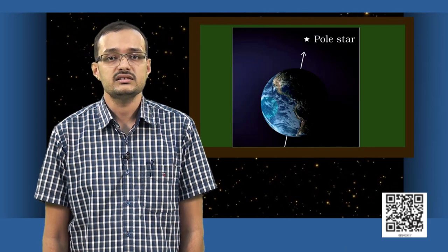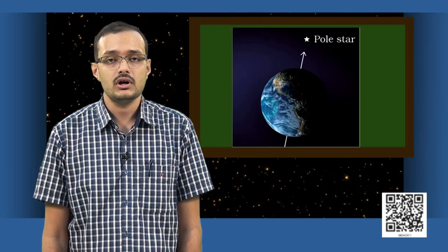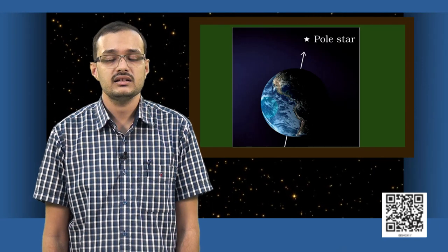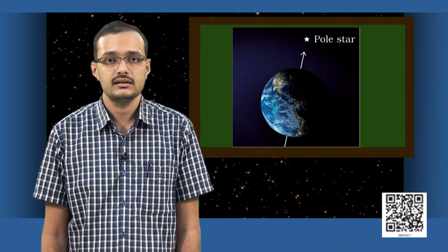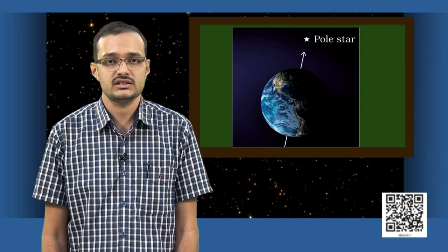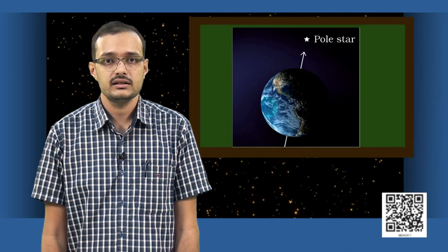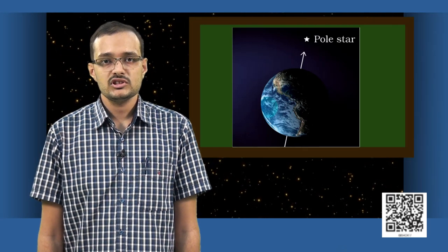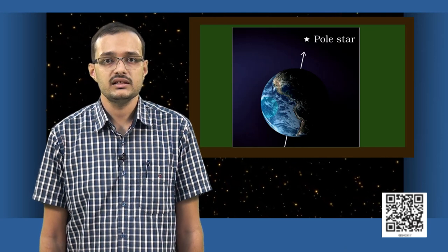Do you think there is a star that lies along the north-south axis on the axis of earth's rotation? Yes, there is actually one star which we call as the pole star that lies along this north-south axis. In fact, this pole star remains fixed in the night sky. The pole star is actually used by sailors to navigate because it points towards the northern direction in the sky.